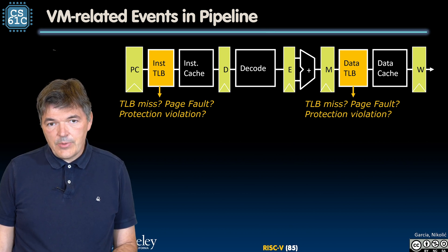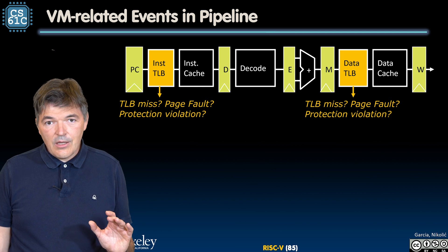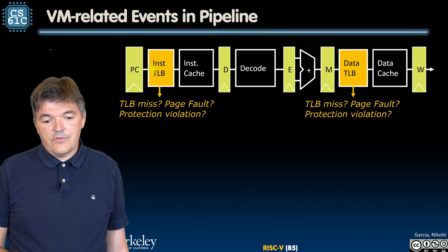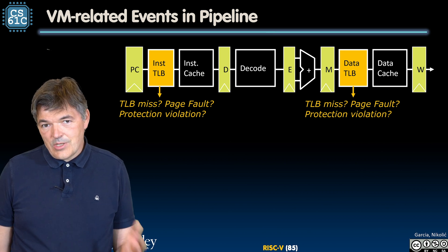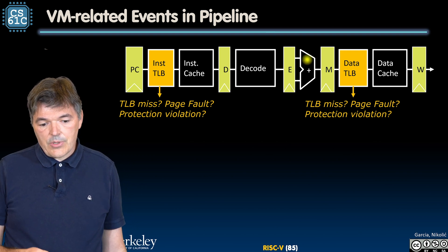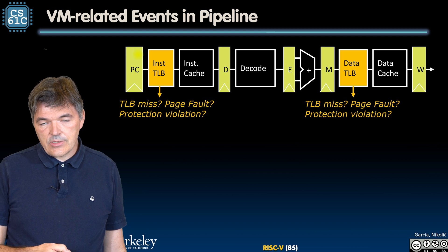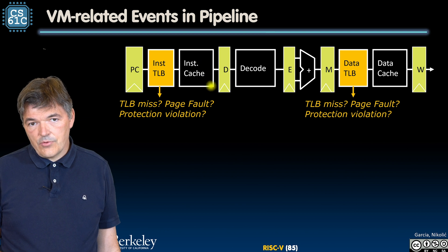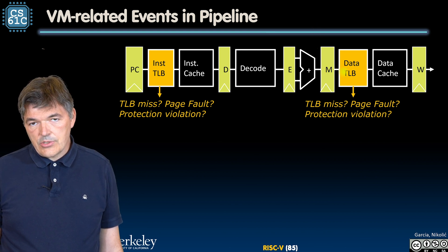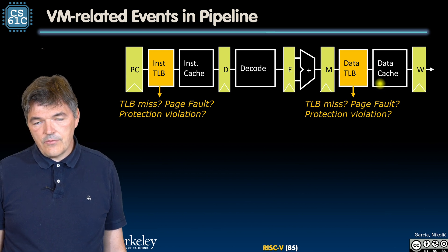Here is our five-stage pipeline that we have seen before. We can see one modification: the insertion of two TLBs in front of the instruction cache and the data cache, because we remember that TLBs need to precede the cache. Our program counter is going to issue virtual addresses, and the TLB is going to translate these virtual addresses into physical addresses before they go into the cache. Similarly, our data memory references are going to be virtual before they reach the TLB, and the TLB is going to translate them to the physical ones.